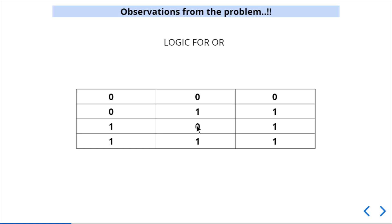Let's understand the logic of OR. If both bits are 0, the resultant bit is 0. If any bit is 1, the resultant bit is 1. This is the basic logic for the OR operation.